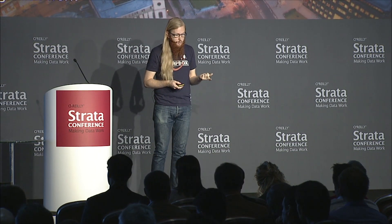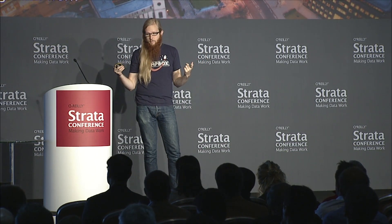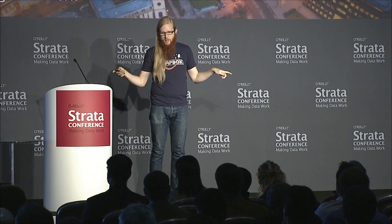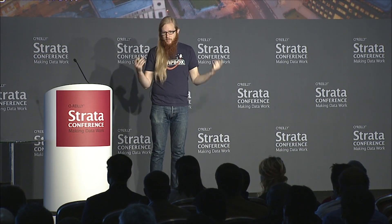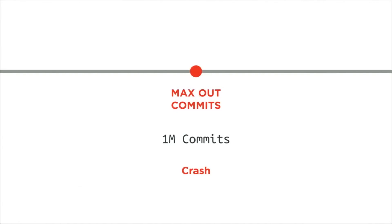That's a big problem because if two programmers on the same team want to use different databases, they have to do twice as much work. And eventually with Git, you hit a point around a million commits where it just gets too big — you're writing data too fast, it can't commit fast enough, Git crashes, and you need something more scalable.